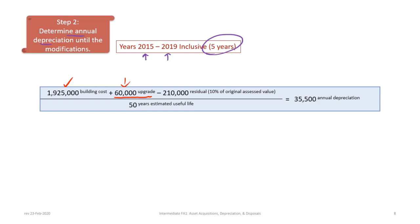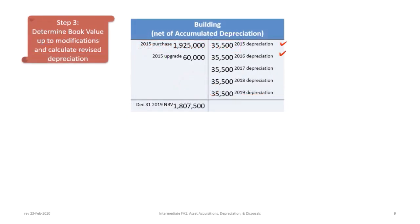There is a $60,000 upgrade cost added to the building cost of $1,925,000. We subtract the residual value, calculated as 10% of the original assessed value of $2.1 million, giving $210,000 estimated residual value. The estimated useful life is 50 years. Dividing by 50 years gives annual depreciation of $35,500. Taking original cost plus the $60,000 upgrade minus five years of depreciation at $35,500 gives a net book value at December 31st, 2019 of $1,807,500.